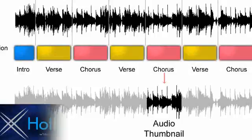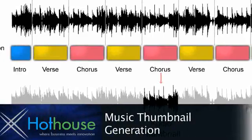Music thumbnail generation relates to the process of automatically extracting the most representative part of a piece of music. In popular music, this corresponds to the chorus section, which is the most repetitive and catchy part of the song.